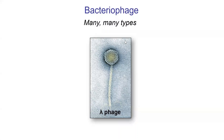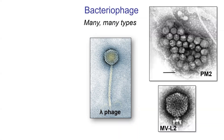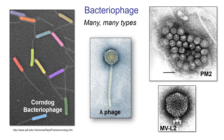I was looking around and there are lots of different shapes and sizes of bacteriophage. So there's lambda phage, here's one called PM2 — it doesn't have a tail on it — there's one called MVL2. And then my favorite is the corn dog bacteriophage. A corn dog is basically a sausage with a little bit of dough around it on a stick. I thought those ones were really cute.